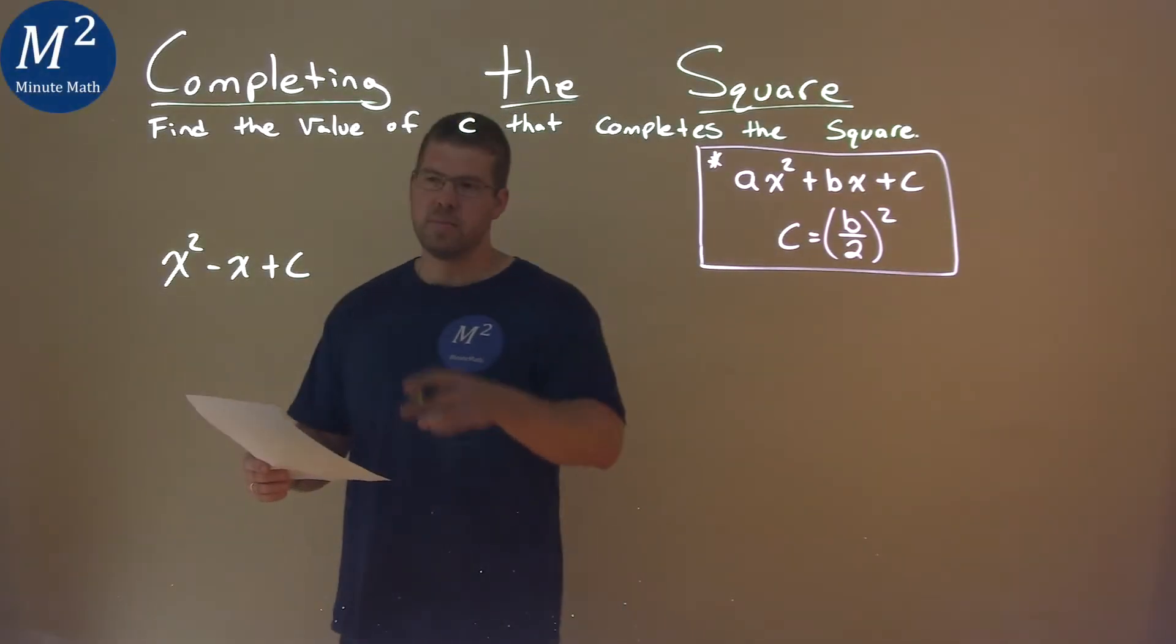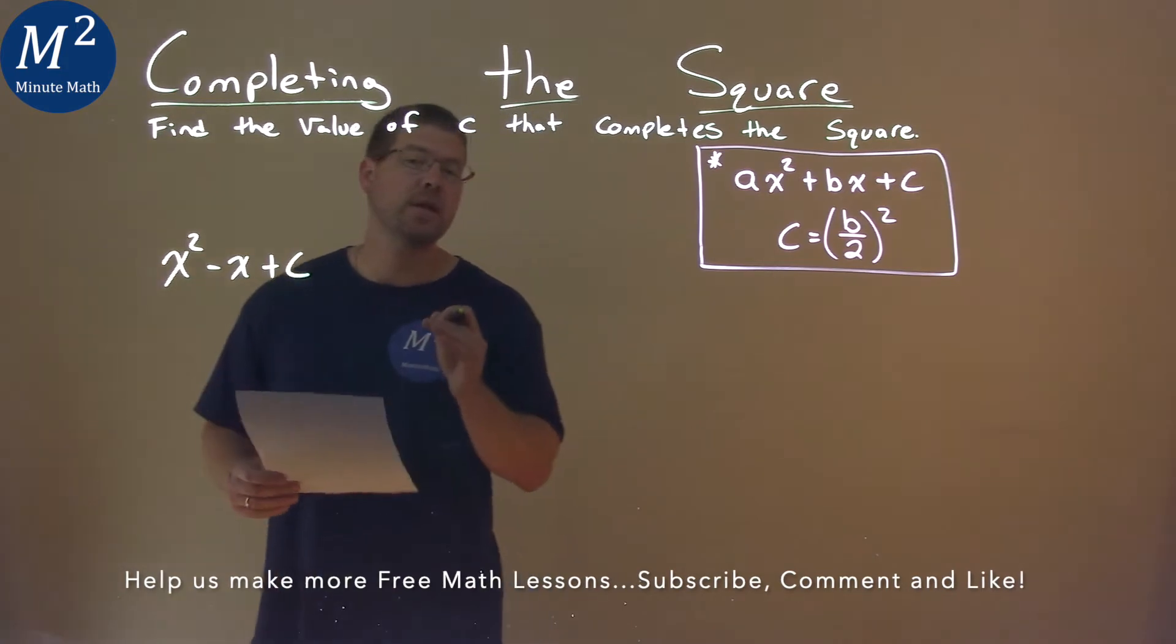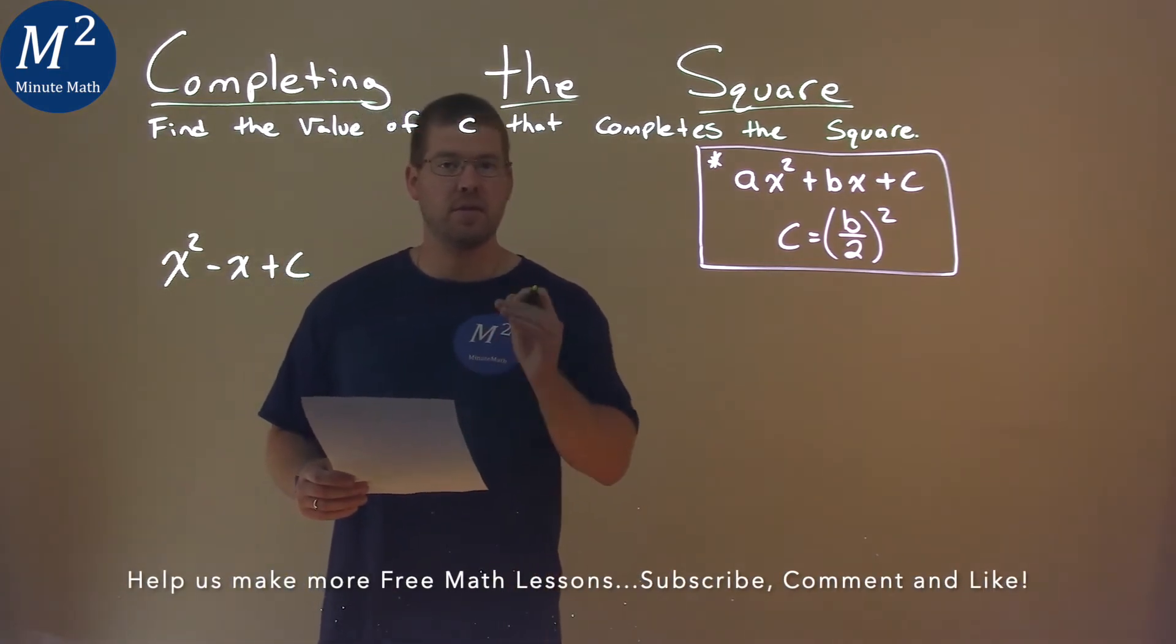We're given this problem right here, x squared minus x plus c, and we need to find the value of c here that completes the square.